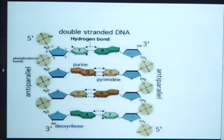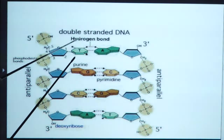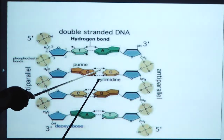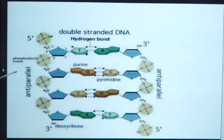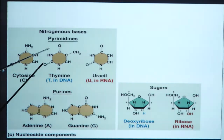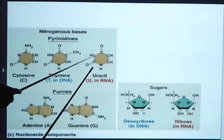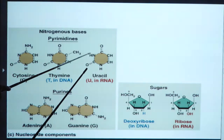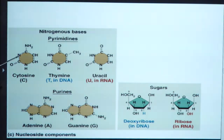In a double-stranded DNA molecule, this is the hydrogen bonding between bases. Nitrogenous bases in pyrimidines include cytosine, thymine, and uracil. Uracil is present only in ribonucleic acid — it is absent in deoxyribonucleic acid. In DNA, thymine is present, whereas in RNA, uracil is present in its place.